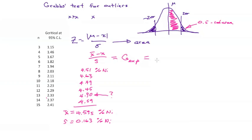So let's calculate the experimental value of g. So we take the average value and subtract from that the suspicious value, 4.90.